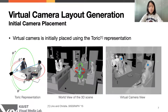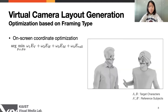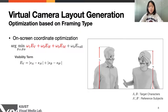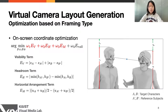Based on the classified shot information, virtual camera layout is generated. Using the toric representation introduced by previous work, the virtual camera is initially placed with respect to target characters. Then, optimization on on-screen coordinates is conducted to make the virtual camera layout closely represent the framing type of the reference. There are three cost terms for framing and one term for preventing camera roll. The first term is a visibility term, which ensures the layout follows the framing type. The second term is a headroom term, which ensures the layout has a reasonable headroom size similar to that of the reference. The third term is a horizontal arrangement term, which ensures the on-screen horizontal arrangement is similar to that of the reference.